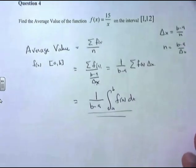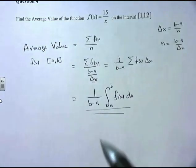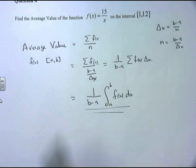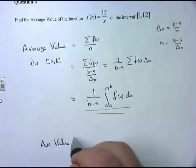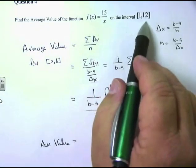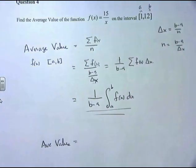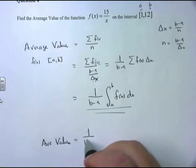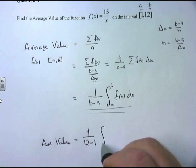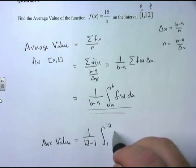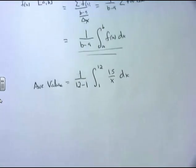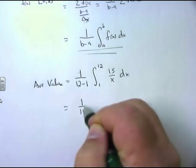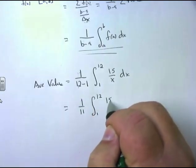Applying this formula to our problem: find the average value of f(x) = 15/x over the interval from 1 to 12. Here a = 1 and b = 12. So this is (1/(12−1)) times the integral from 1 to 12 of (15/x)dx. Cleaning up, 12−1 = 11, giving (1/11) times the integral from 1 to 12 of (15/x)dx. Pulling the constant out front: (15/11) times the integral from 1 to 12 of (1/x)dx.